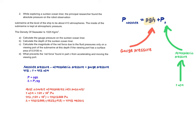Alright, part C says calculate the magnitude of the net force due to the fluid pressures only on a viewing port of the submarine at this depth if the viewing port has a surface area of 0.0100 meters. So here, hopefully you're thinking, well, if I'm trying to figure out force and I know pressure, then I know that P equals F over A, and they just gave me A, so I can solve for F.